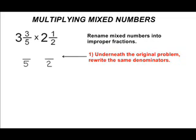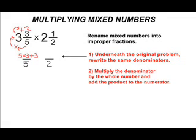However, we will have a different numerator. For 3 3/5, you multiply the denominator times the whole number, so we take 5 times 3 which gives us 15, and then we add the numerator to 15, which is 15 plus 3, and that gives us 18.